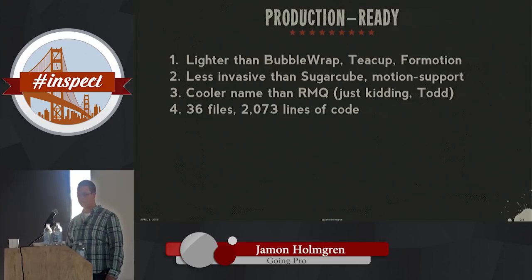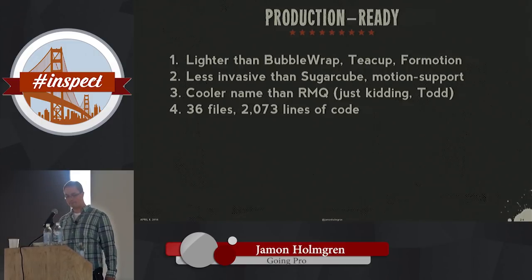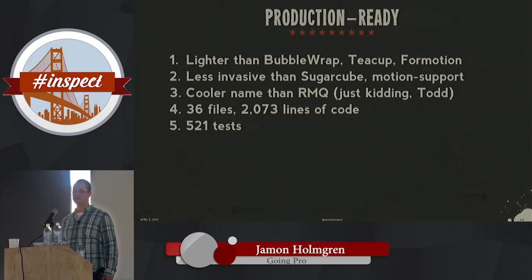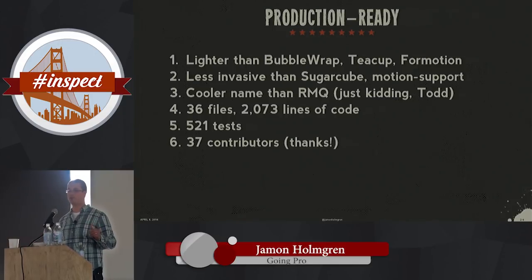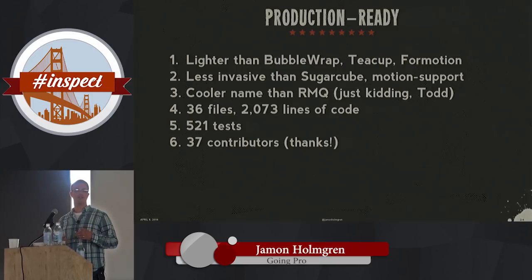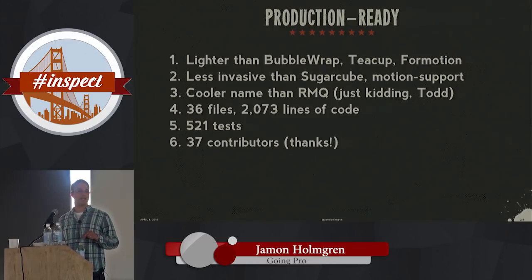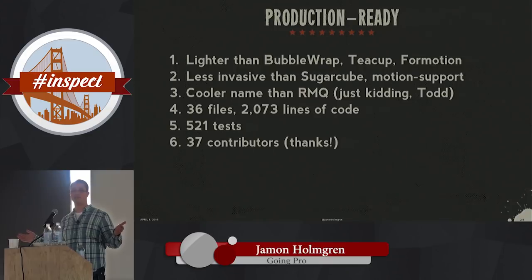Currently ProMotion 1.2 is 36 files and 2,073 lines of code, with 521 tests — a decent test suite. We know when things break. And this is the coolest part: we have 37 contributors. That's far beyond what I ever expected. I think one of the things that gravitates non-English speakers to ProMotion is that it's very simple and easy to remember — it doesn't have all these long English words. We want this to be a welcoming community for beginners, non-English speakers, and advanced programmers who want to build really cool apps.